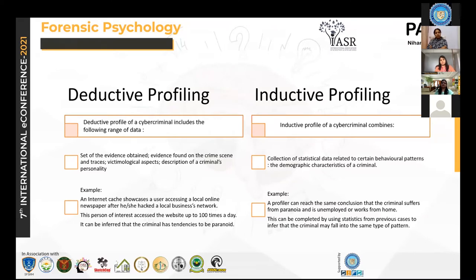Inductive profiling majorly helps establish linkage between crimes. By using statistical or comparison data, we can link one particular crime to previously done crimes. For example, in a similar case of cyberstalking, a profiler can reach the same conclusion that a person suffers from paranoia and is unemployed or works from home, using statistics and previously known cases.